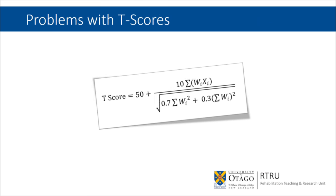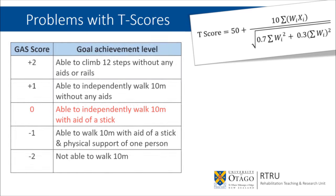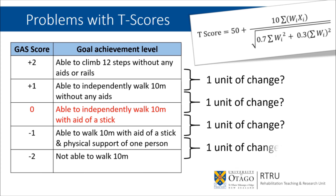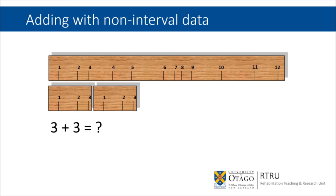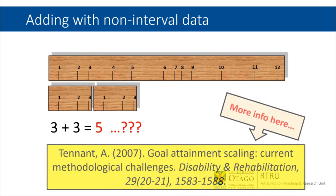Other authors have criticized the T-score itself. T-scores start with the assumption that goal attainment scaling produces interval data, where each step on the scale is equivalent, like centimeter increments on a ruler, when this is not by any means necessarily the case. This assumption is required because it is only meaningful to add, multiply and divide data if it is interval, all of which are employed in calculating T-scores.